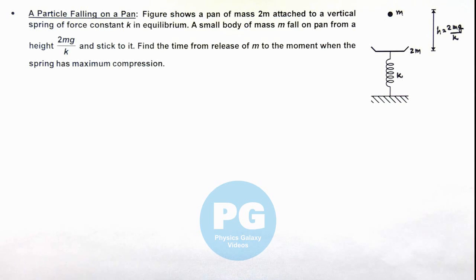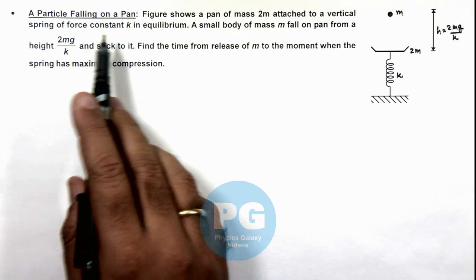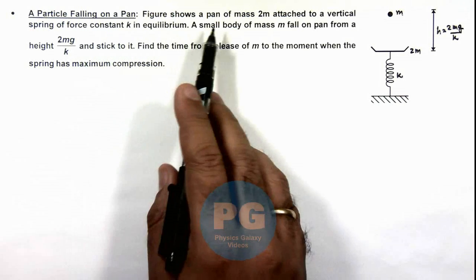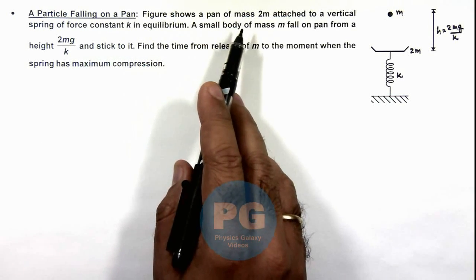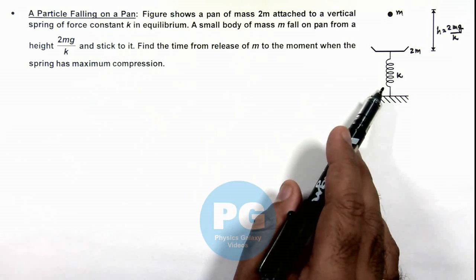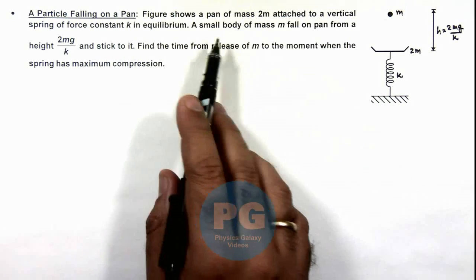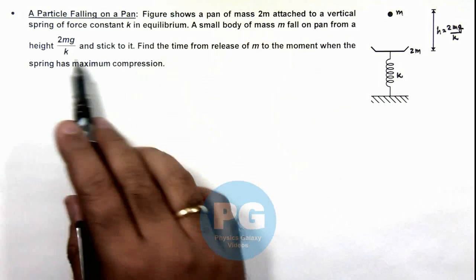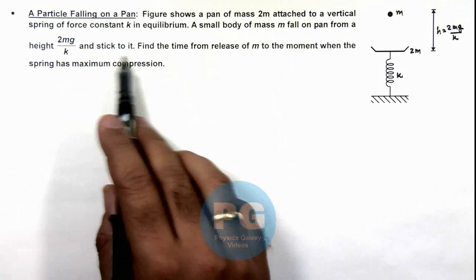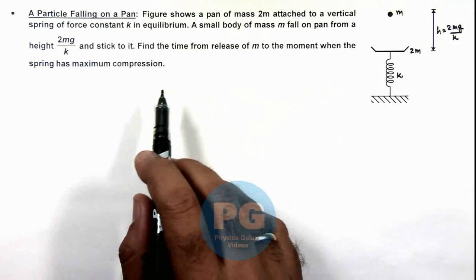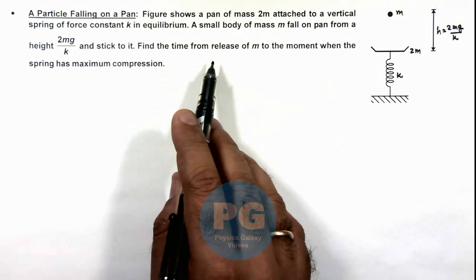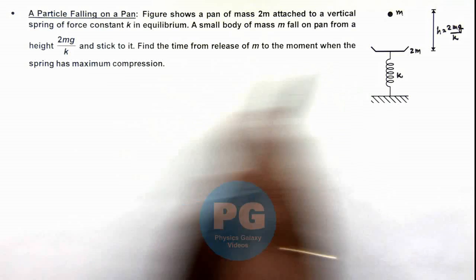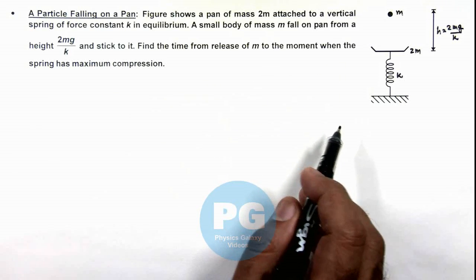In this illustration we'll discuss and analyze a particle falling on a pan. The figure shows a pan of mass 2m attached to a vertical spring of force constant k in equilibrium. A small body of mass m falls on the pan from a height h = 2mg/k and sticks to it. We are required to find the time from the release of m to the moment when the spring has maximum compression.